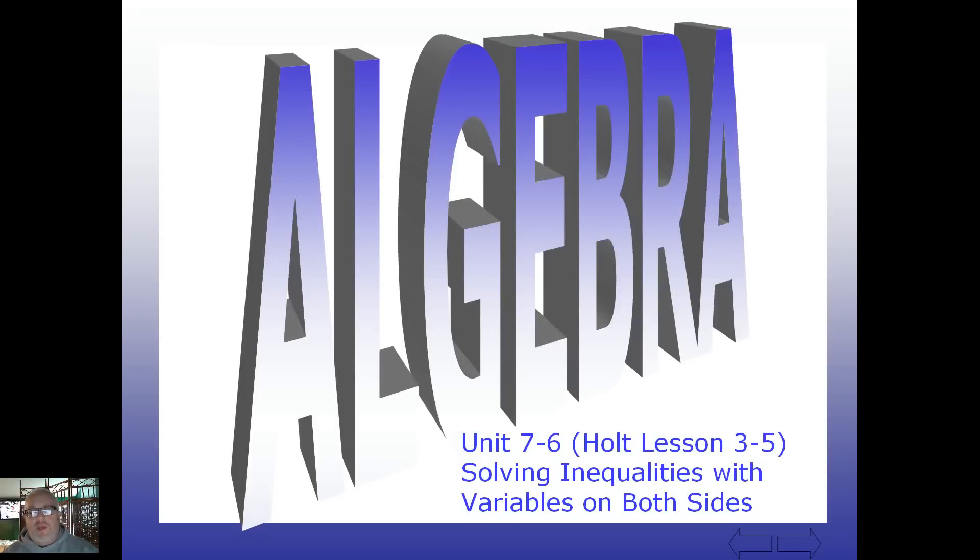Hey, welcome back. Unit 7-6 here. We're going to be solving inequalities with variables on both sides. We've solved equations with variables on both sides. This time, we're going to have some inequalities. So the only thing we're going to have to watch out for is that negative sign, and maybe we can show you a way around that.